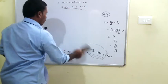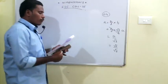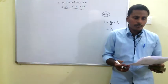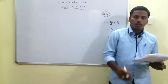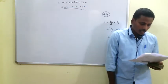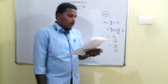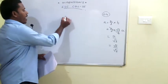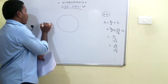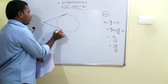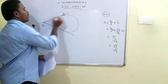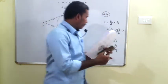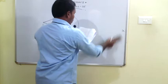The 65th problem: sides of two similar triangles are in the ratio 4:9. The areas of similar triangles are in the ratio of the squares of their sides, so the ratio of areas is 16:81. The 66th problem: PA and PB are two tangents drawn to a circle from an external point P. Since tangents drawn from an external point are equal, PB equals PA, which is 5.